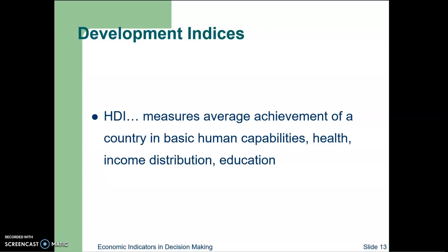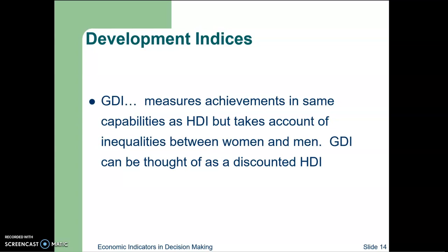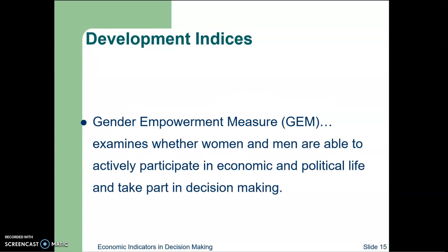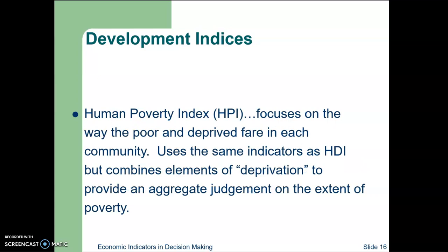The Human Development Index measures average achievement of a country in basic human capabilities: health, income distribution, and education. The Gender Development Index measures achievements in the same capabilities as the HDI but takes into account inequalities between women and men — GDI can be thought of as a discounted HDI. The Gender Empowerment Measure examines whether women and men are able to actively participate in economic and political life and take part in decision-making. The Human Poverty Index focuses on how the poor and deprived fare in each community, using the same indicators as HDI but combining elements of deprivation to provide an aggregate judgment on the extent of poverty.